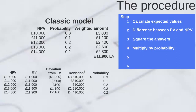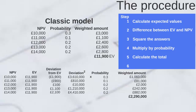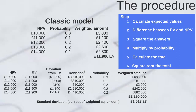Multiplying £3,610,000 by 0.3 gives us a weighted amount of £1,083,000. For the £11,000 outcome, we take £810,000 and multiply by 0.1 to get £81,000. We repeat for the other potential outcomes. Totalling our weighted amounts gives us £2,290,000. The final step is to square root the total, and this gives us our standard deviation. The square root of £2,290,000 is £1,513.27.